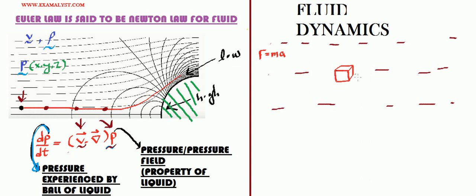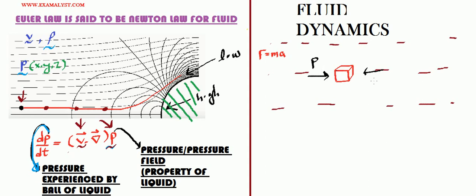This cube of liquid is experiencing pressure from all sides — from this side, from this side, from this side, from here along this side, and the back side. If we consider that the distribution of pressure is not equal, then say this cube of fluid is experiencing a pressure P on one side, and along the other side it is experiencing a pressure P plus some extra pressure. Let that extra pressure be dP/dx times delta x.